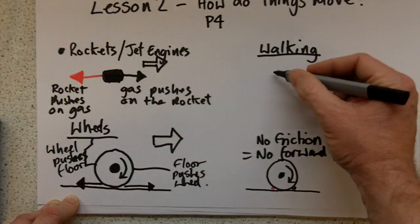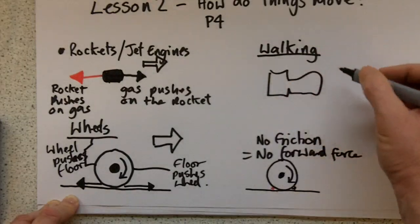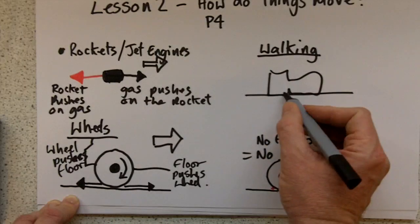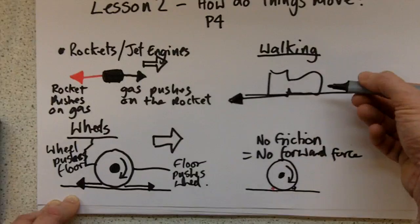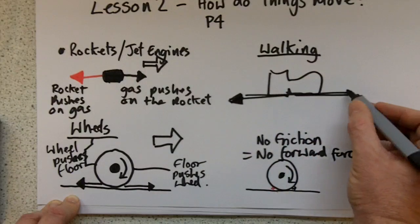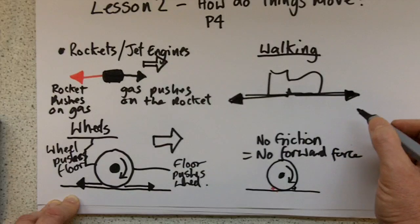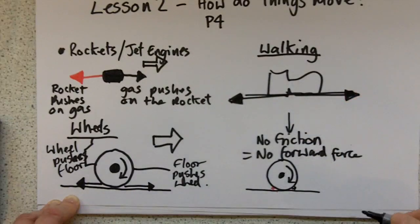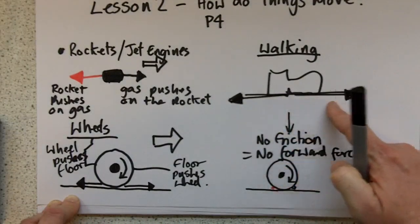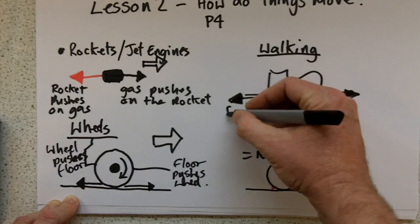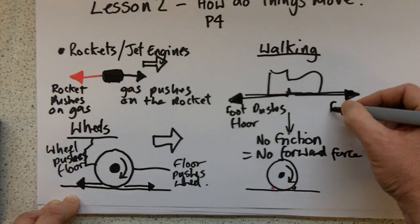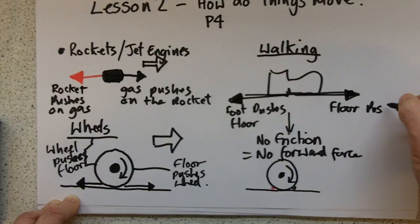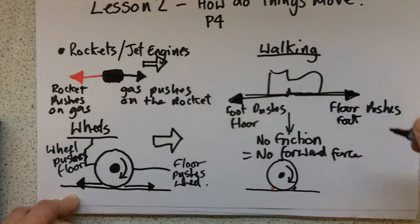The same applies to walking. When you're trying to walk, you're on the ground and you apply a force backwards — foot pushes floor backwards, therefore the floor pushes the foot forwards. Unless, of course, you're on ice, in which case you can't apply a big backwards force because you cannot get any grip, and therefore the interaction pair force is also tiny. Foot pushes floor, floor pushes foot — and that's how we move.